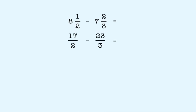Now we must rewrite the fractions with a common denominator. 17 halves becomes 51 sixths, and 23 thirds becomes 46 sixths. Now just subtract: 51 sixths minus 46 sixths is equal to 5 sixths.